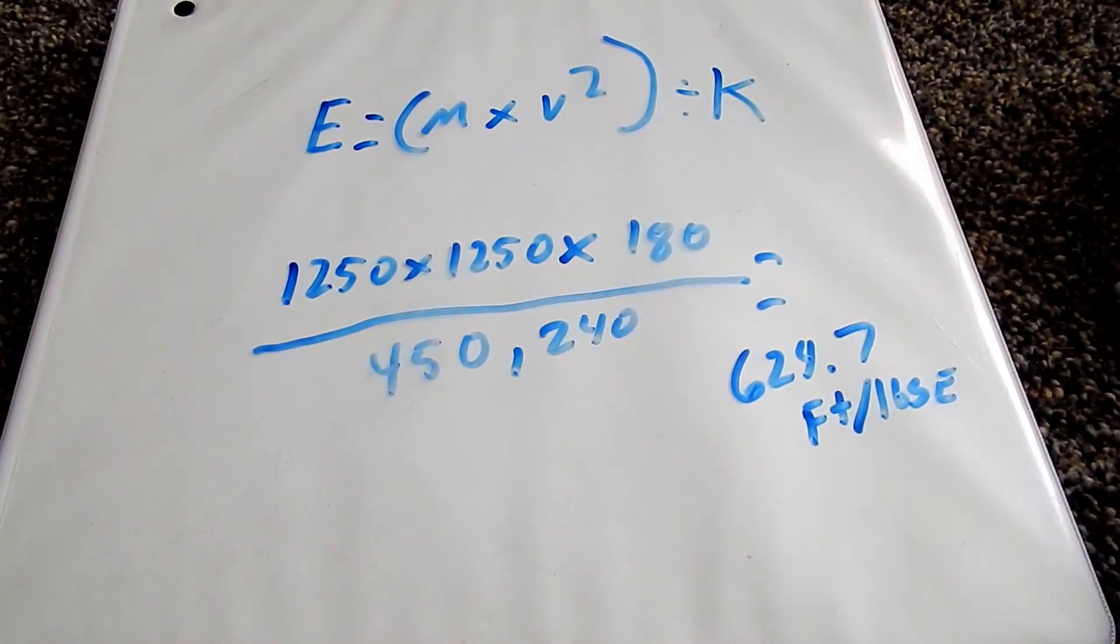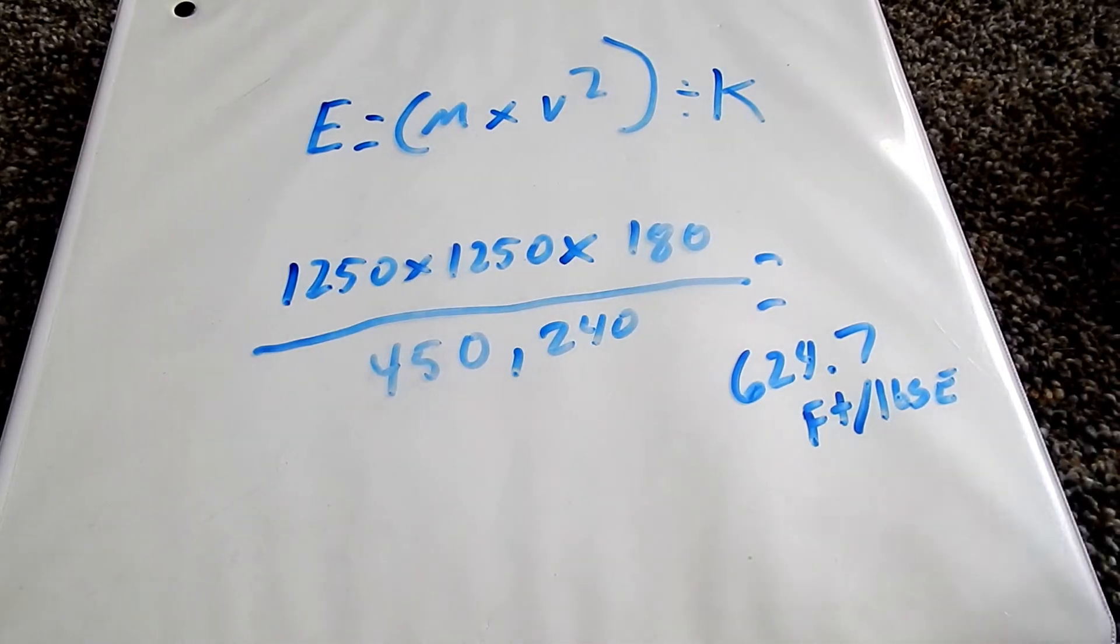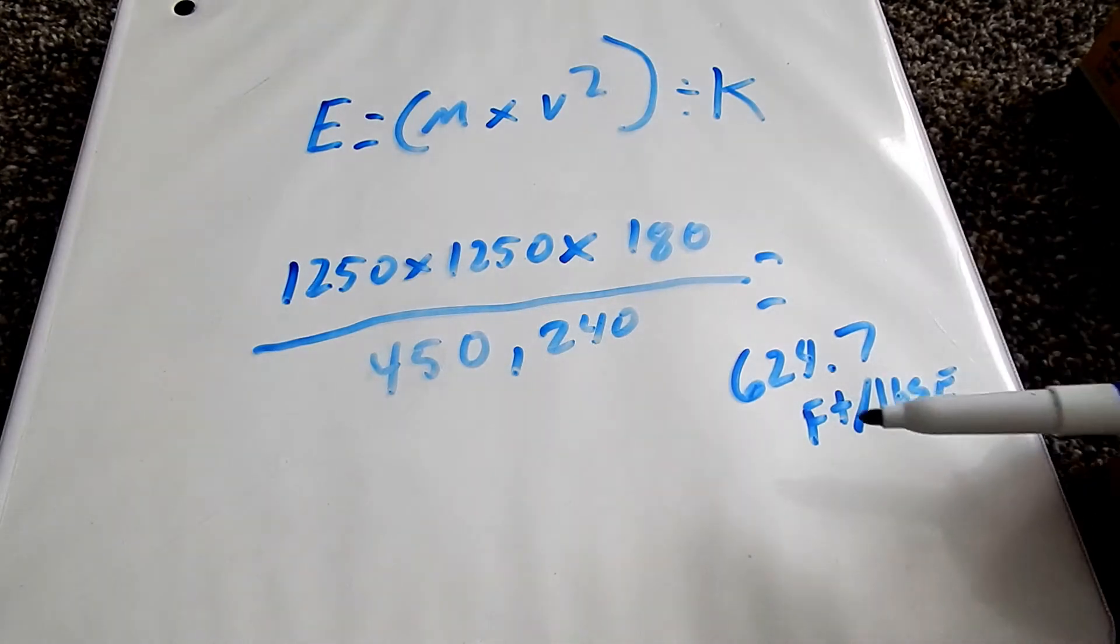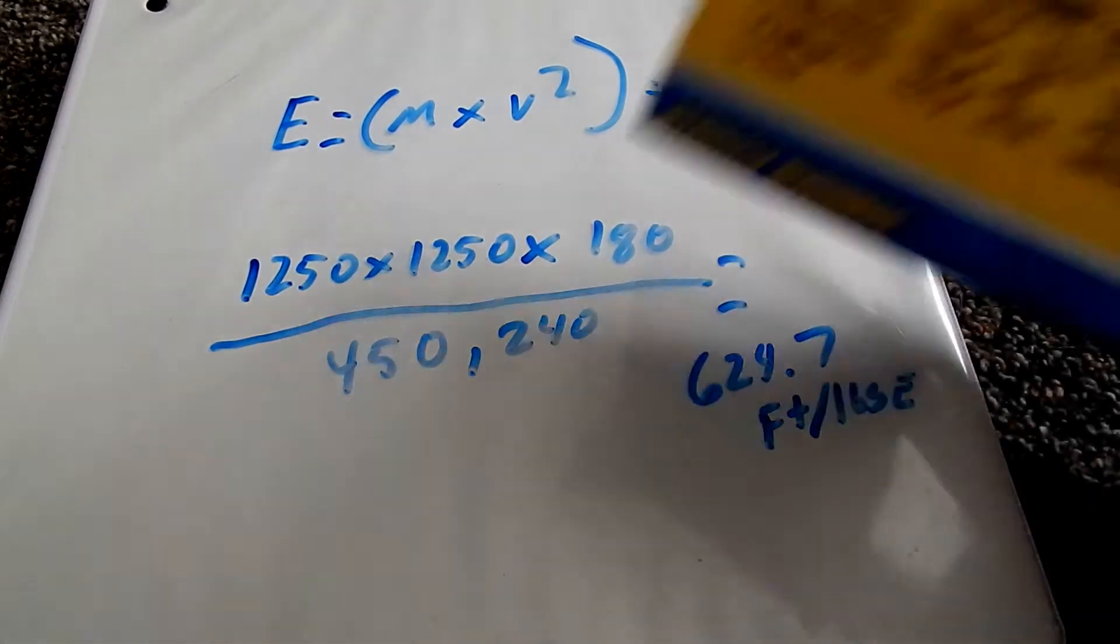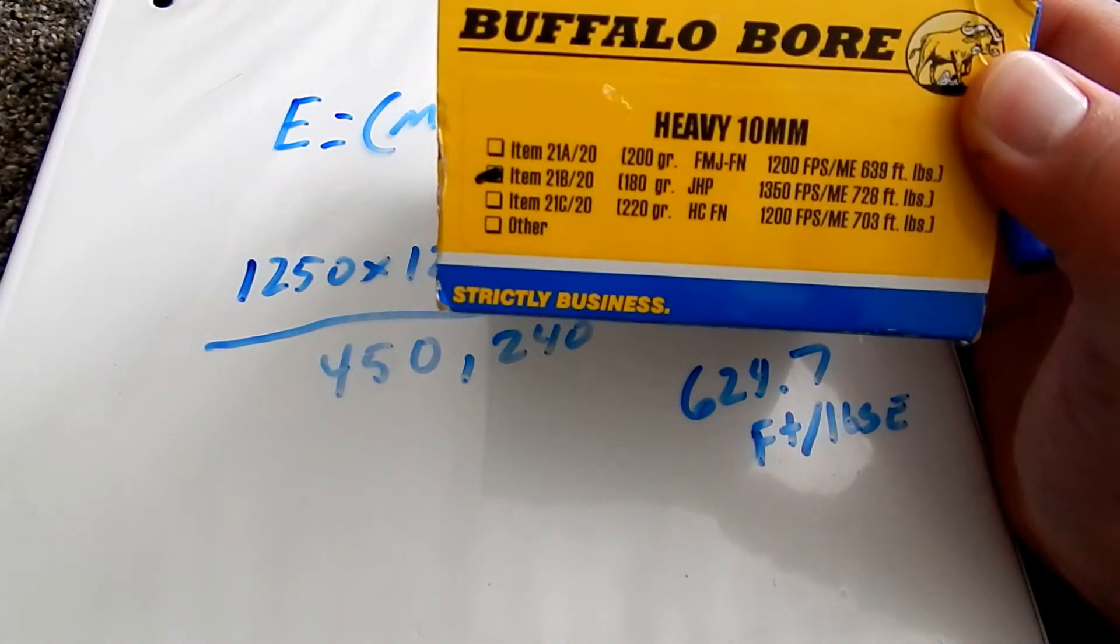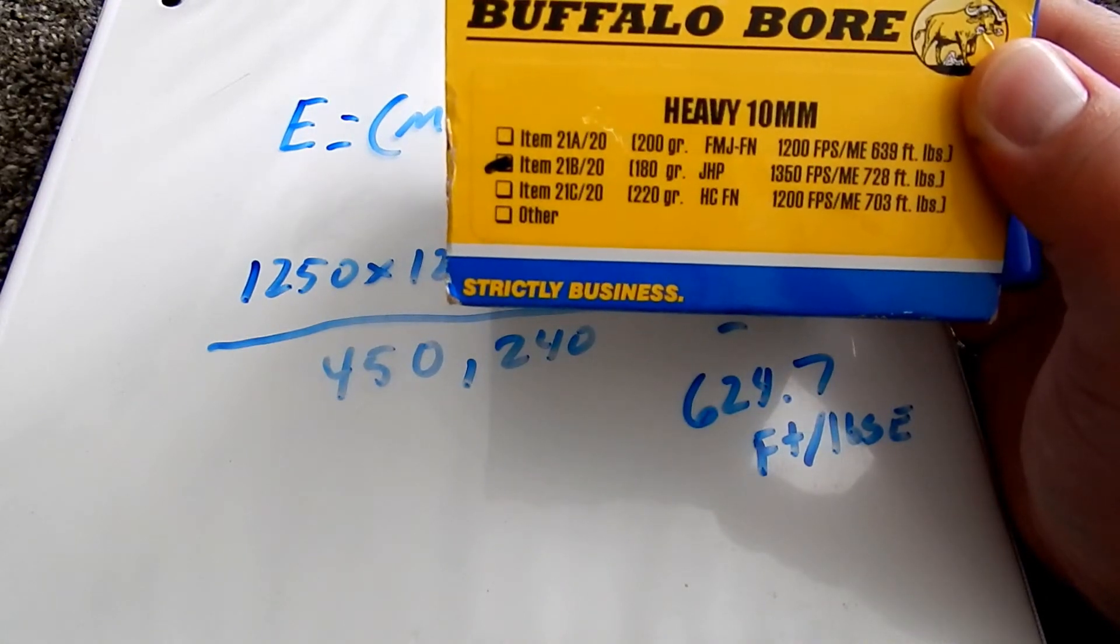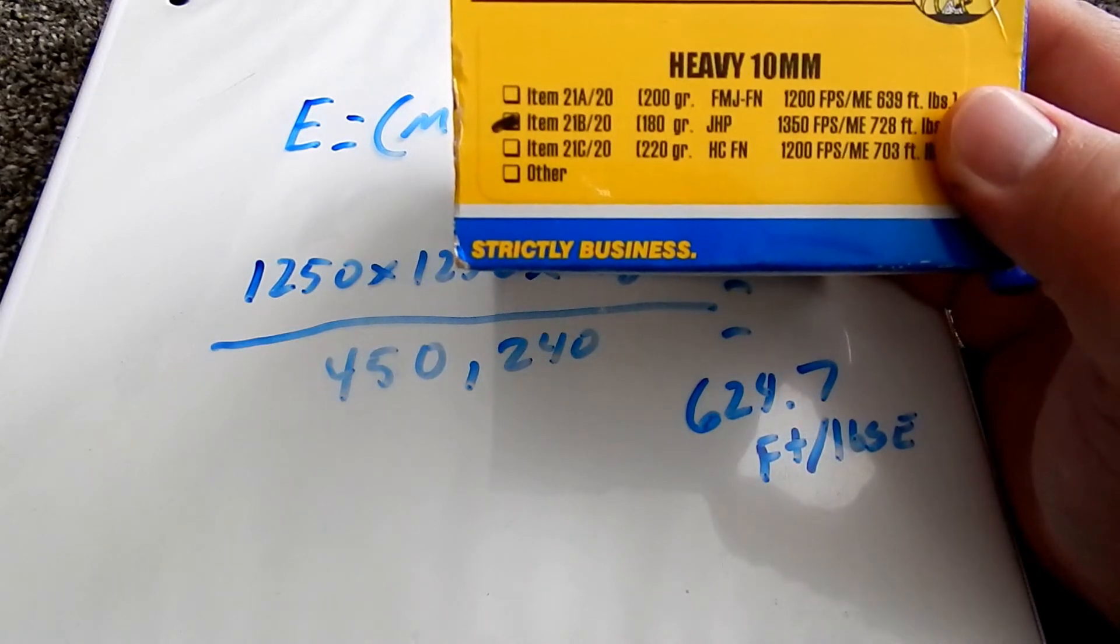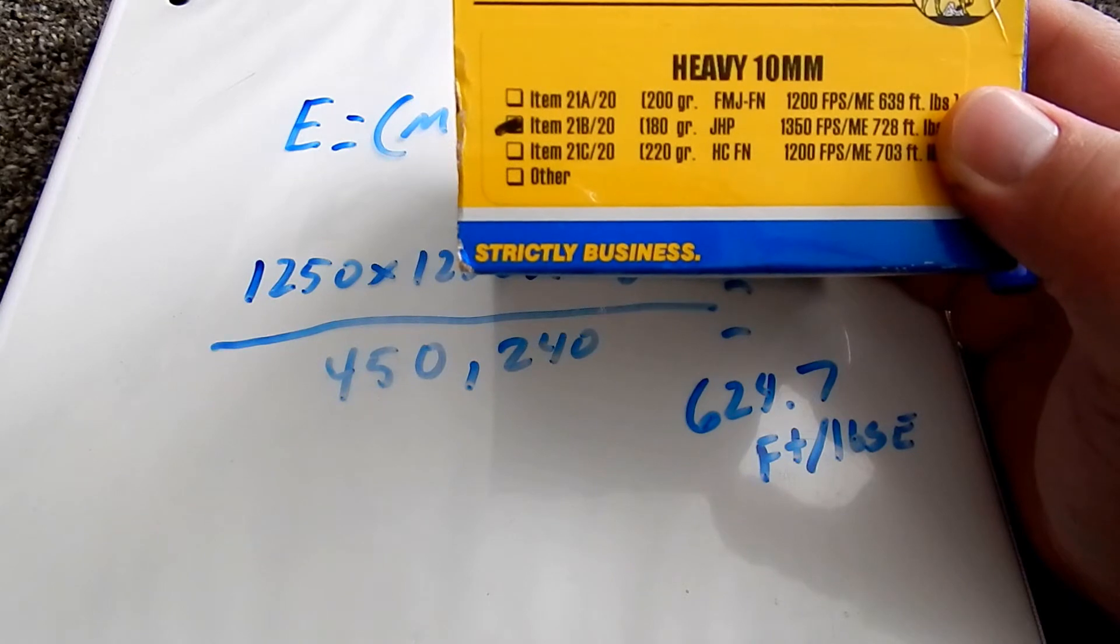So this is a valuable tool to use especially in reloading if you do acquire a chronograph, because you can kind of see. So this reload I did a comparison to Buffalo Bore here, 180 grain. They're obviously pushing theirs at quite a 100 foot per second faster. So there's a big difference there, you got about 100 foot per second faster and 100 foot pounds more energy.